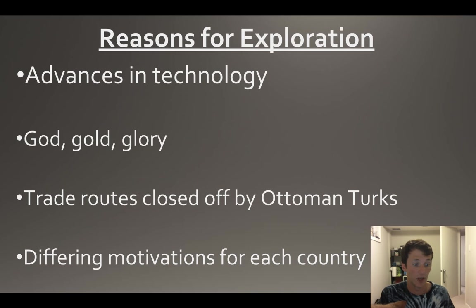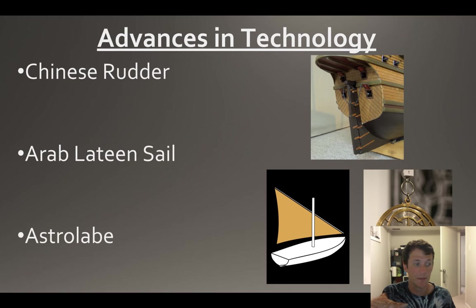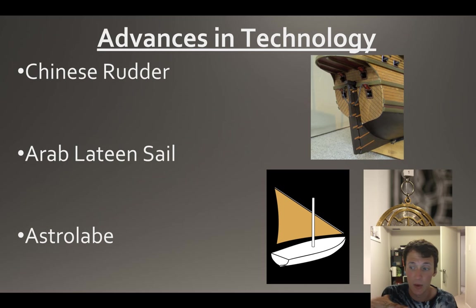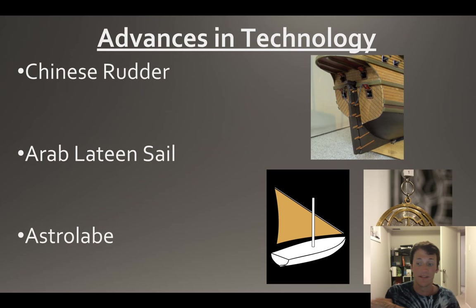The trade routes have been closed off by the Turks - Constantinople was taken over by the Turks and changed into Istanbul, and every other country is going to have differing motivations. We talked about three major technologies you need to be aware of: you have the rudder, you have the lateen sail, and you have the astrolabe.